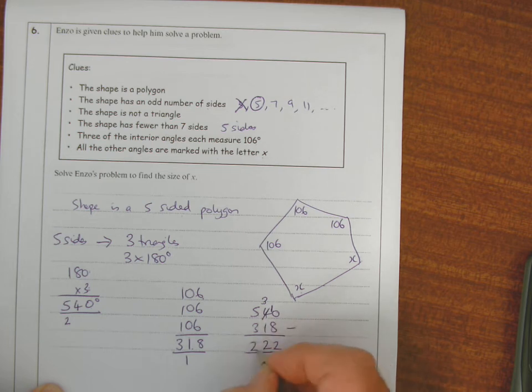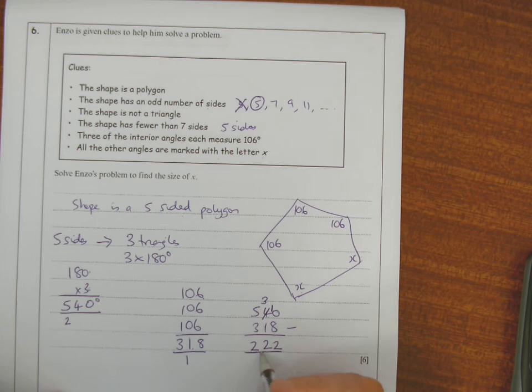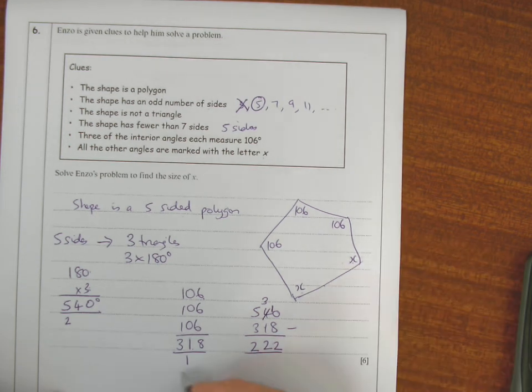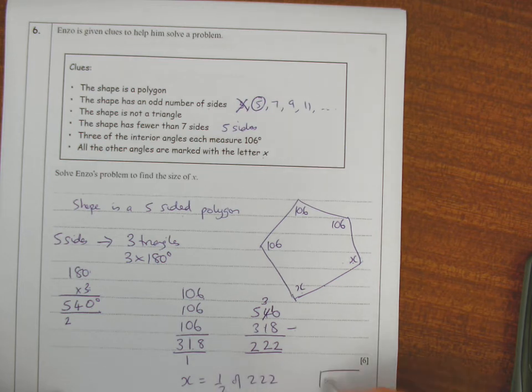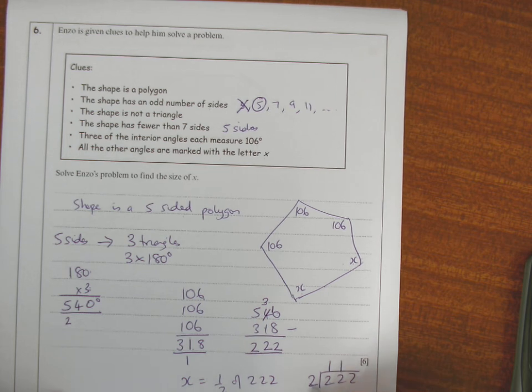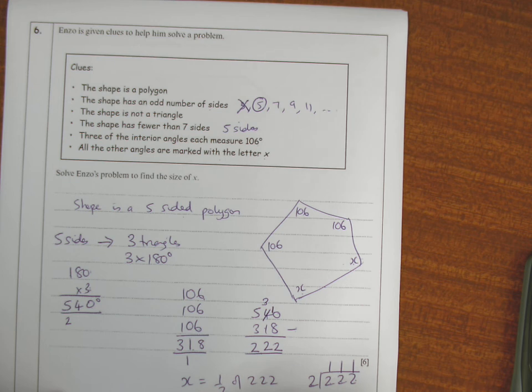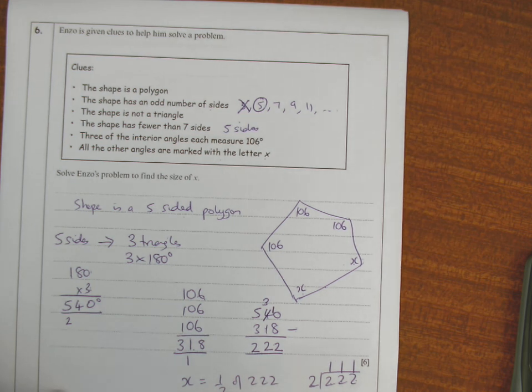So I've got 222 degrees to share equally between these two values, so x is going to be half of 222. Two into 2 goes 1, two into 2 goes 1, two into 2 goes 1, so x is 111 degrees.